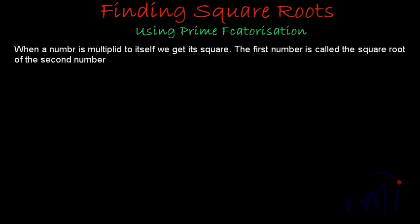In this video we are going to learn about squares and square roots. I have noted down two statements on the screen. The first statement says: when a number is multiplied by itself, we get its square. The second statement says: the first number is called the square root of the second number.